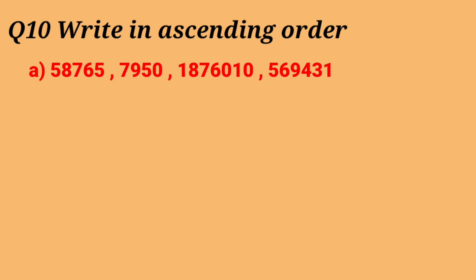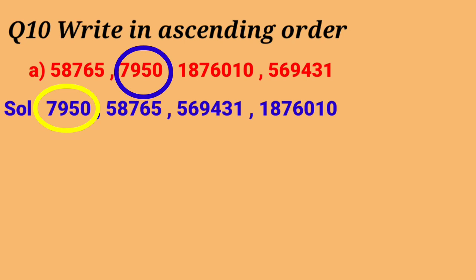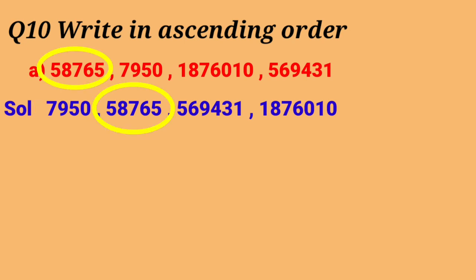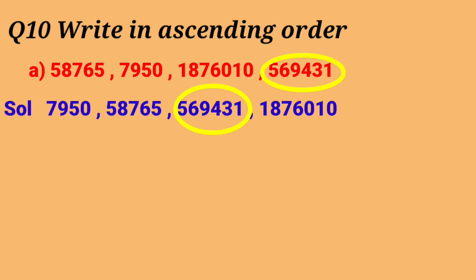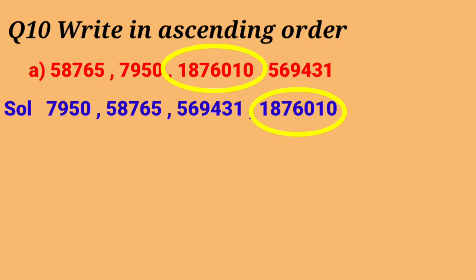So according to the number of digits, which one is smaller? The smallest is 7,950. Next is 58,765. After that the next number is 5,69,431. And the last one is 18,76,010. This is how to write numbers in ascending order.